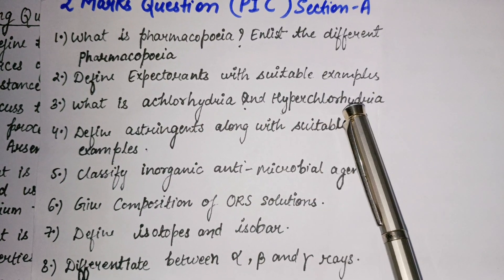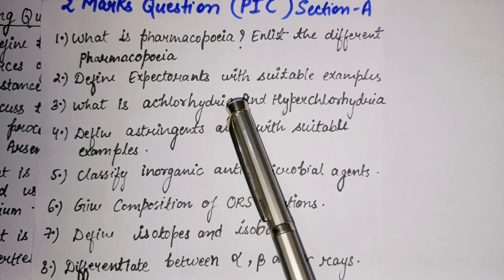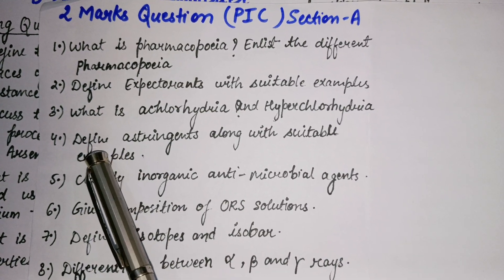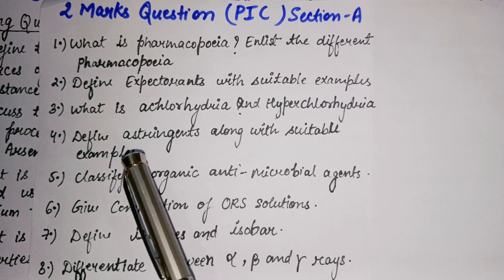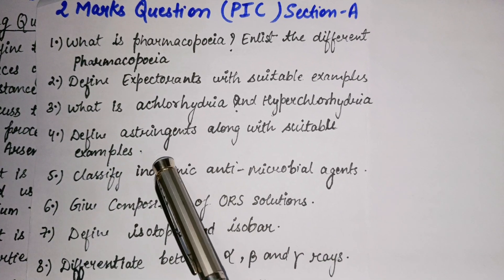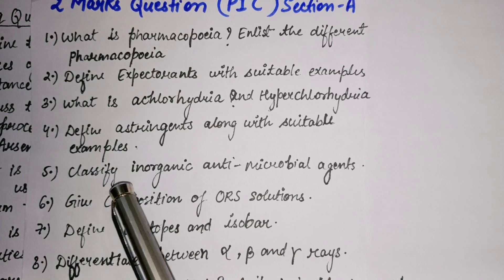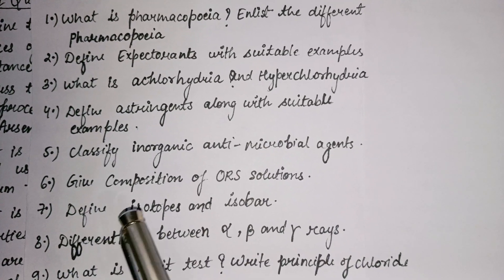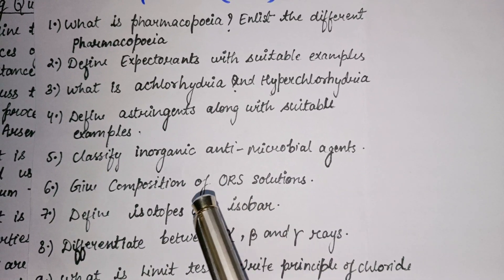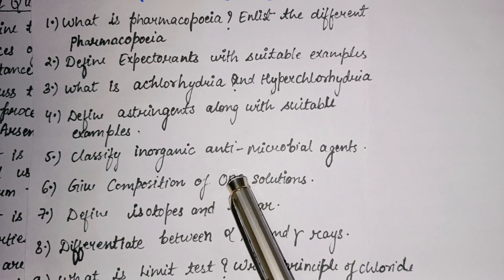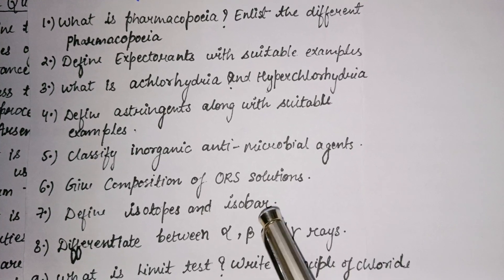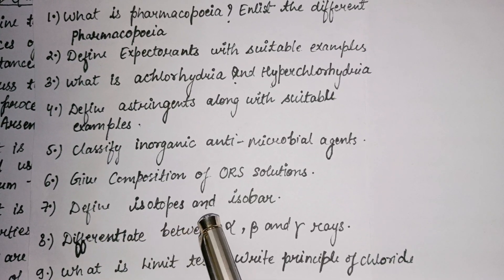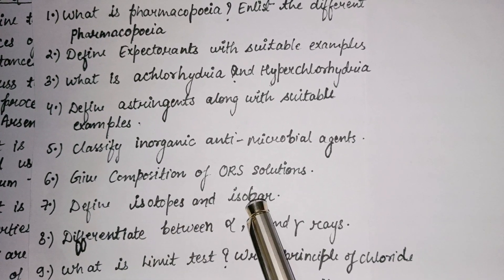The third question: what is chlorohydria and hyperchlorohydria — sometimes only chlorohydria is asked, and sometimes hyperchlorohydria is asked along with it. The fourth question: define astringent along with a suitable example — write what astringents are and give the drug name as an example. The fifth question: classify inorganic antimicrobial agents — write what antimicrobial agents are and their classification. The sixth question: give the composition of ORS solution — write which components and solutions are added in ORS.